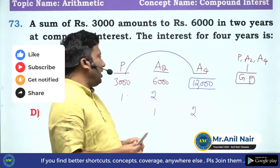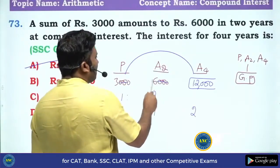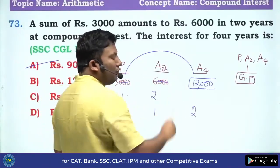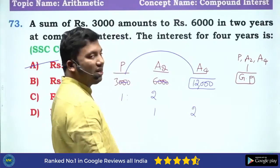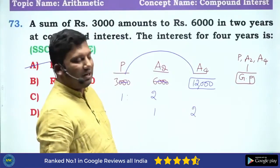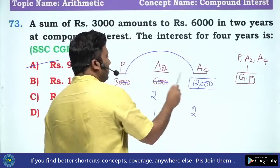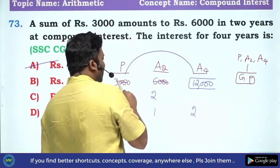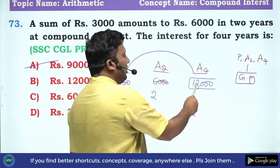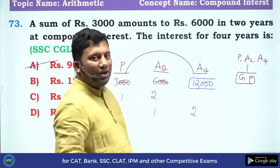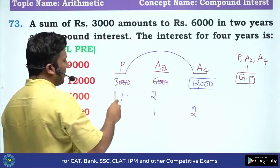Or what you can do is cancel the three zeros. P, A2, A4 are in geometric progression. If A, B, C are in geometric progression, then B² = A × C. So 36 = 3 × something, giving 12. That also you can do.